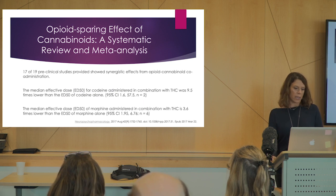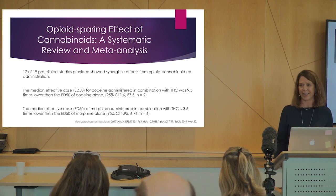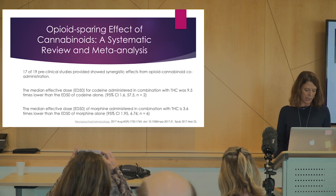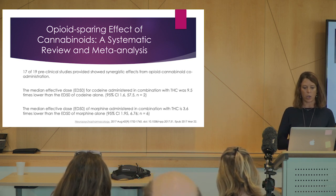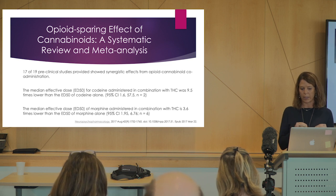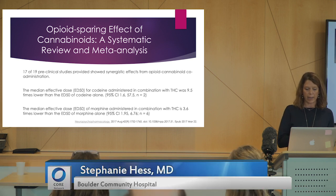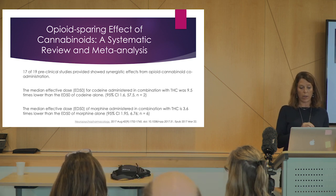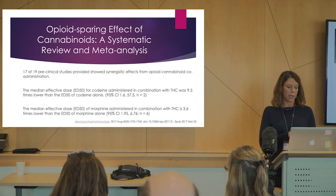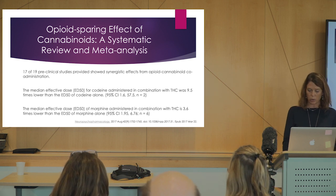There are a couple of systemic reviews and meta-analyses to consider. We don't have great research, so we depend on whatever data we can gather. One study showed that the median effective dose for codeine combined with THC is 9.5 times lower than the median effective dose with codeine alone. And the median effective dose with morphine combined with THC is 3.6 times lower than what's needed with morphine alone — early data showing that synergism.